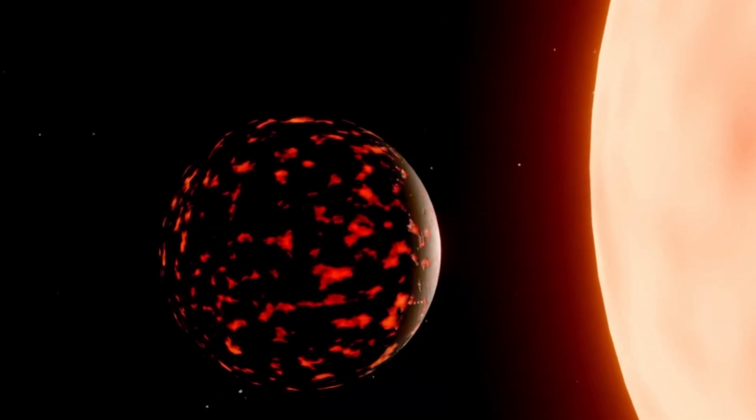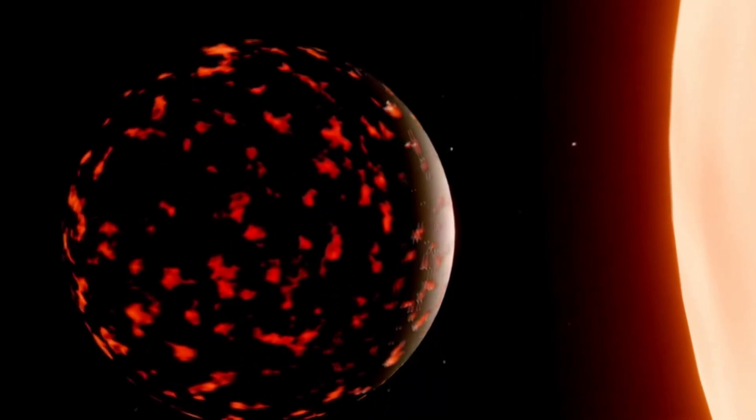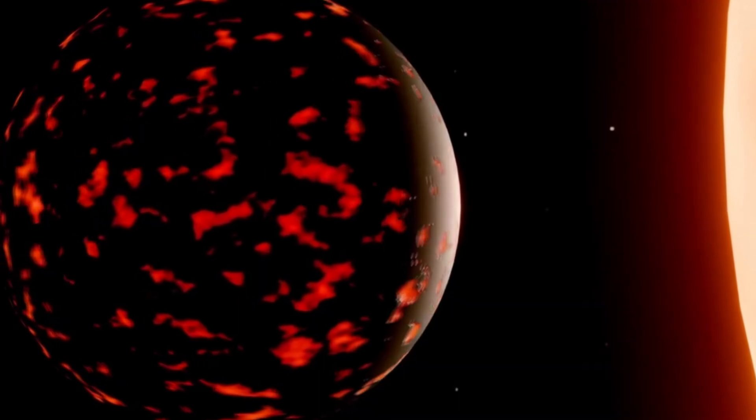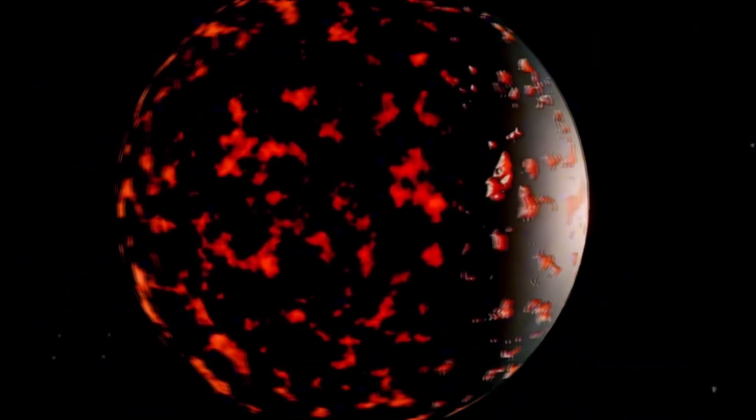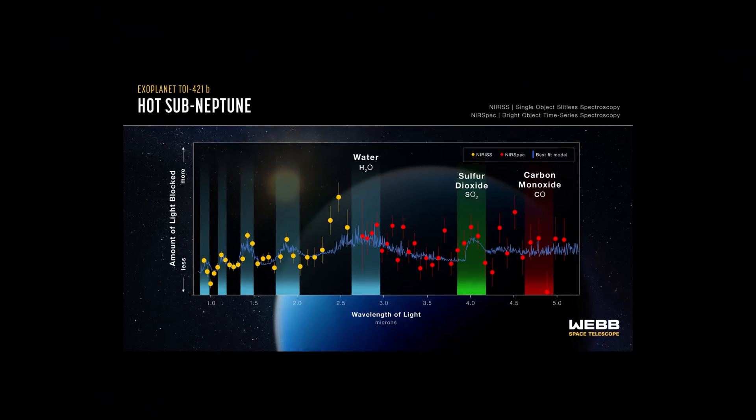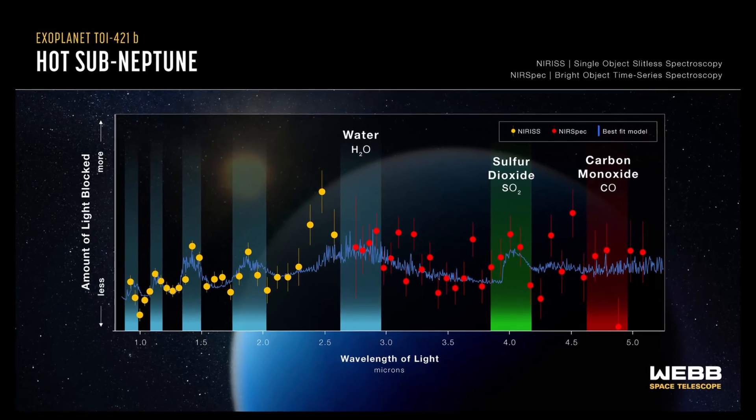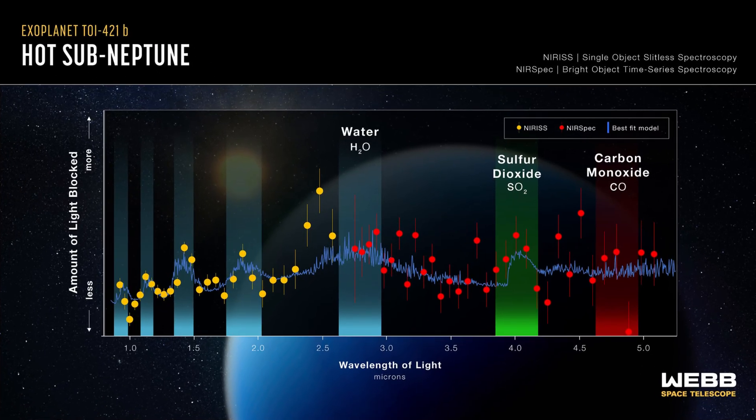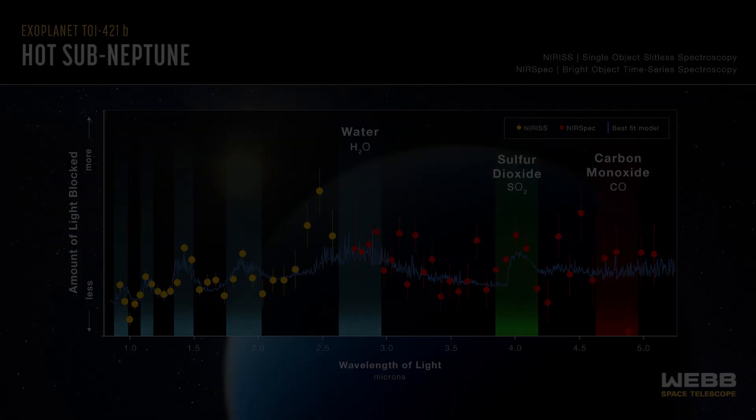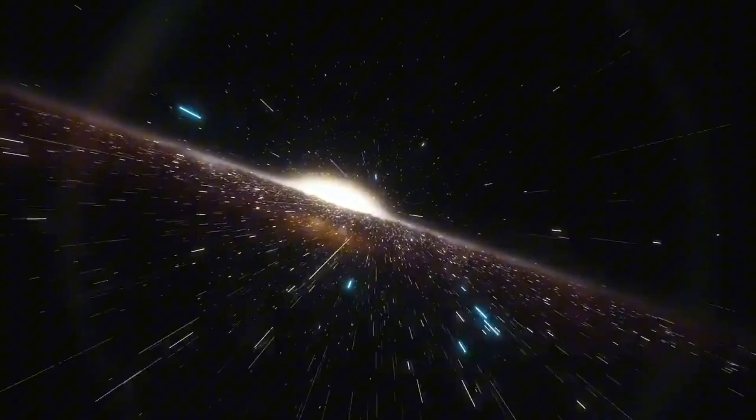These findings challenge parts of the core accretion model, which predicts that water-rich planets should be relatively rare in certain zones of planetary systems. Instead, JWST is showing us that sub-Neptune-sized exoplanets with high water content might be more common than expected, reshaping our theories about where and how these worlds form.